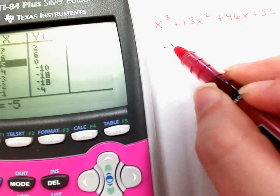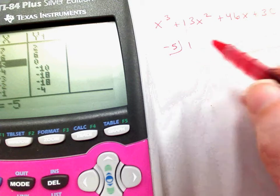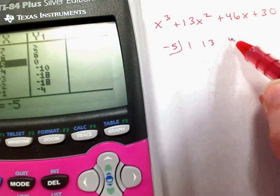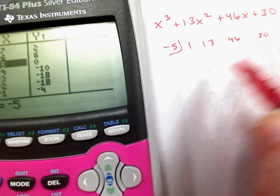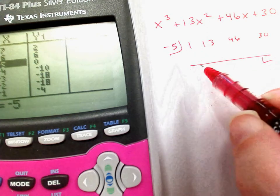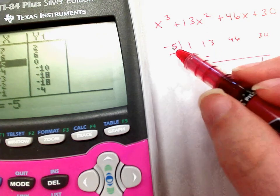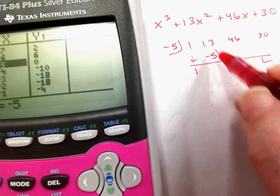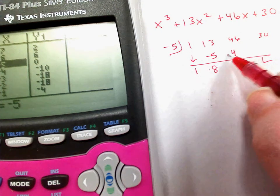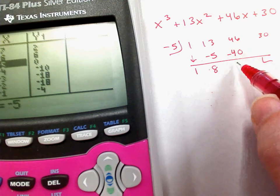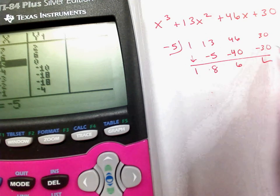Okay, so I'm going to go ahead and negative 5. So, 1, 13, 46, 30. Bring down the 1. Negative 5 times 1 is negative 5. Add negative 8. Multiply and I get negative 40. Add negative 6. Multiply and I get negative 30, and then I get 0.